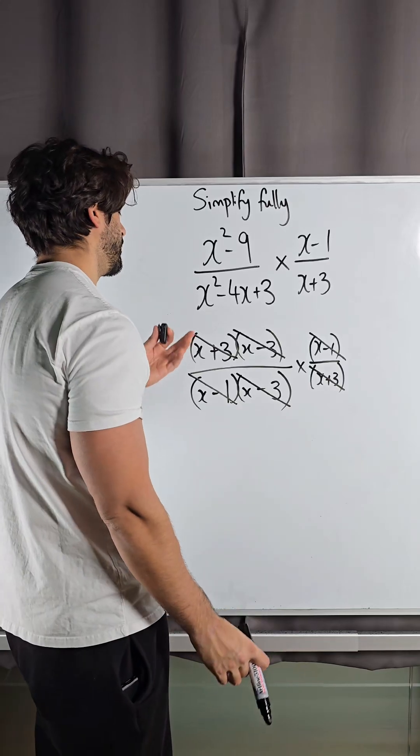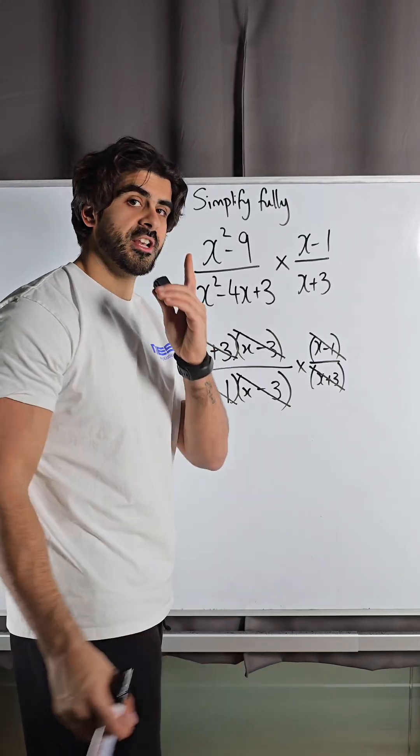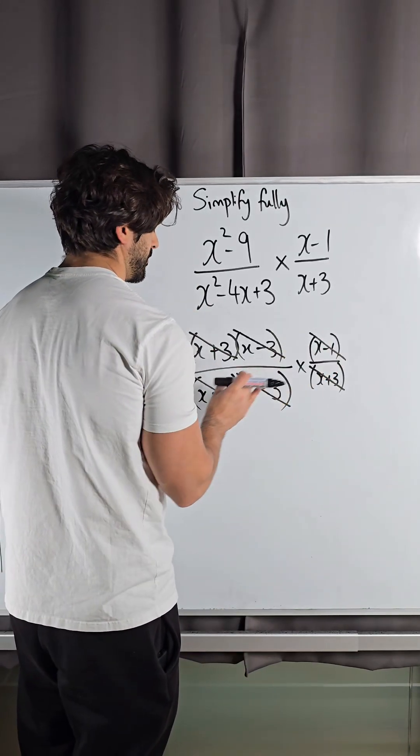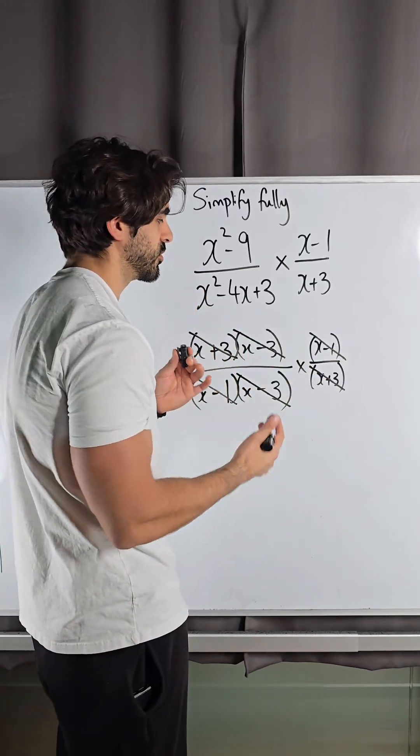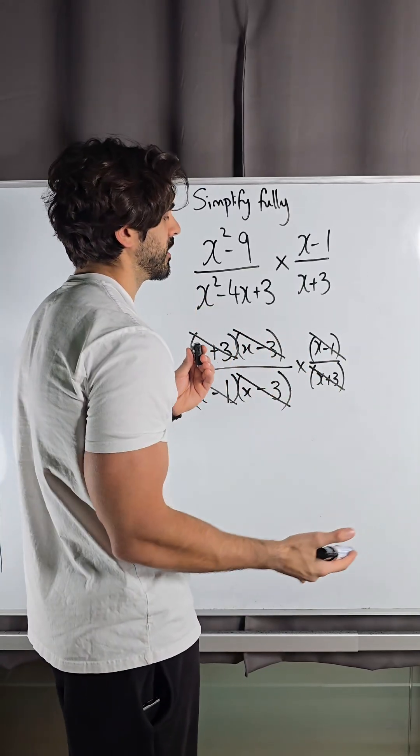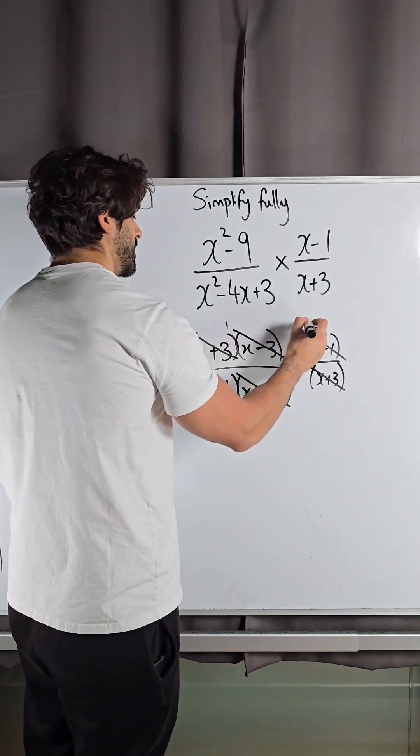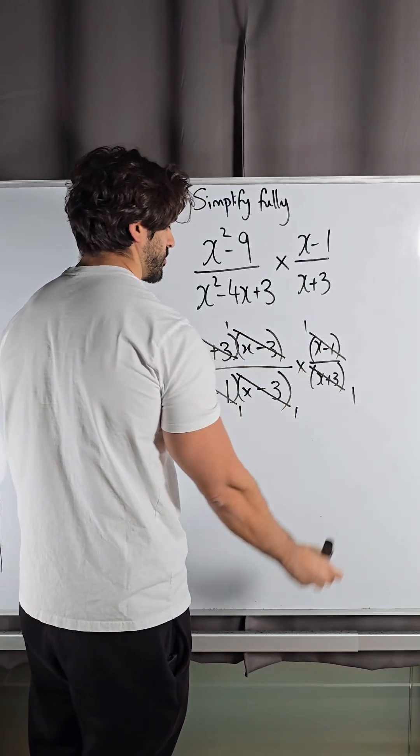Which actually means we're left with nothing. But we're not actually left with nothing. When you divide something that's the same on the top and the bottom, that simplifies down to 1. 2 divided by 2, the 2's cancel, but you're left with 1. So all of these are actually just 1.